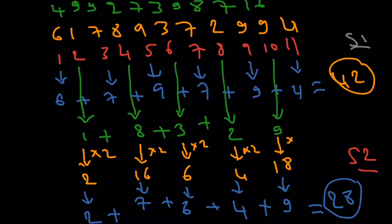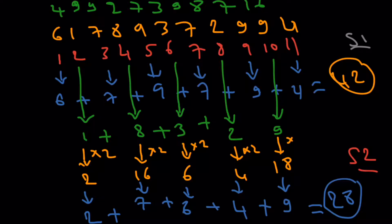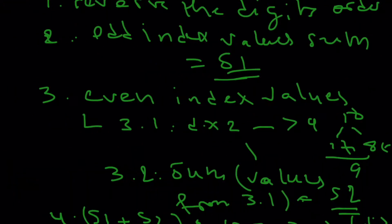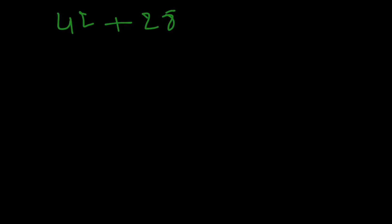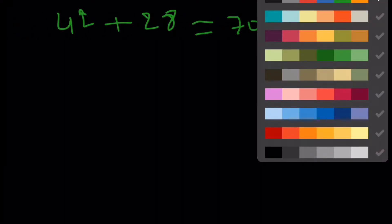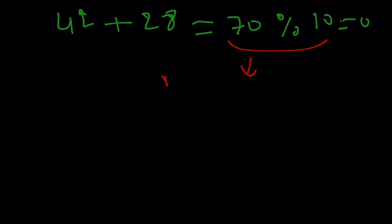So that means the last step is to sum both S1 and S2 and check if modulo 10 is equal to zero. So we take S1 is 42 plus S2 is 28. That gives us 70, which modulo 10 is equal to zero. So this means our check passes the Luhn test because the result is divisible by 10.